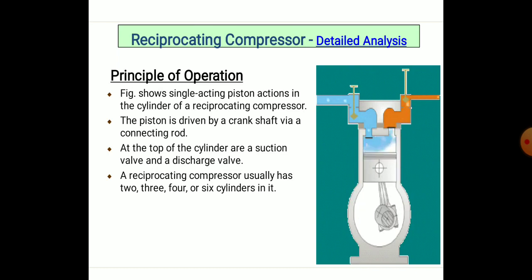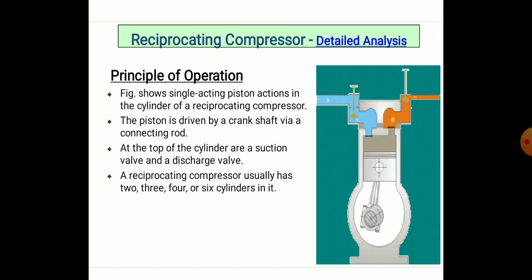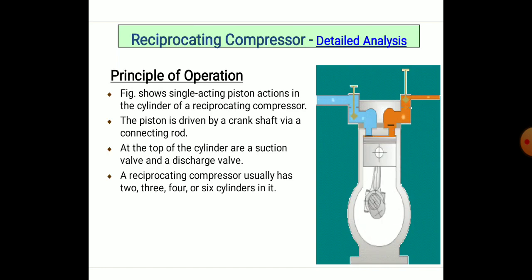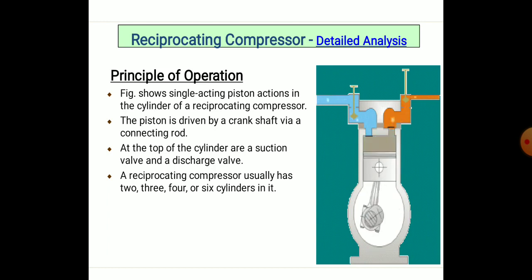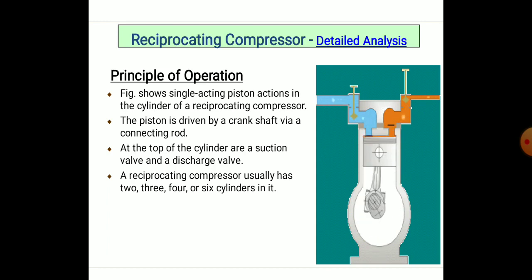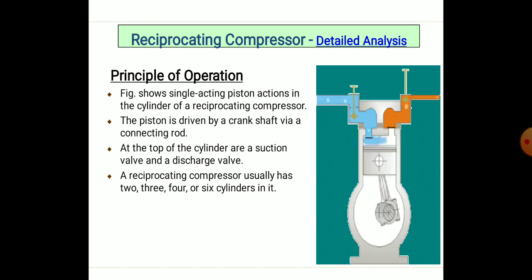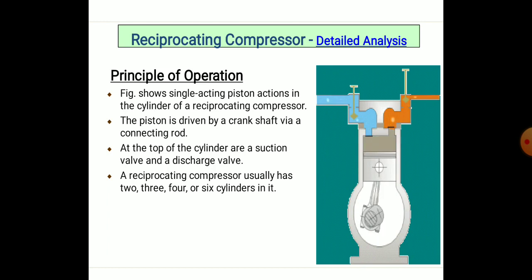The diagram shows the principle of operation of a reciprocating compressor. The single-acting piston is shown in moving mode: the orange line indicates the outlet and the blue line indicates the inlet. The reciprocating motion of the piston compresses the air and delivers it at higher pressure via the orange side. The piston is driven by the crankshaft via the connecting rod. At the top of the cylinder are the suction valve and discharge valve.